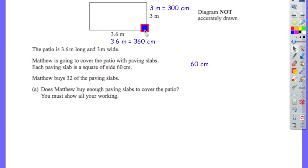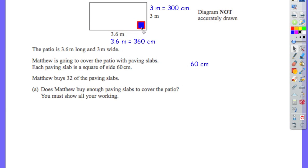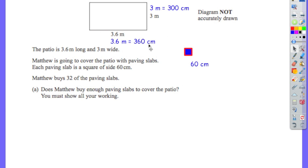For Method 1: the paving slab is 60 centimetres. 60 centimetres fits into 360 six times, because 6 times 60 centimetres is 360. So these paving slabs fit along the length 1, 2, 3, 4, 5, 6 times. Note the diagram isn't accurately drawn, so don't worry if it doesn't look exact. There are 6 paving slabs across the length.